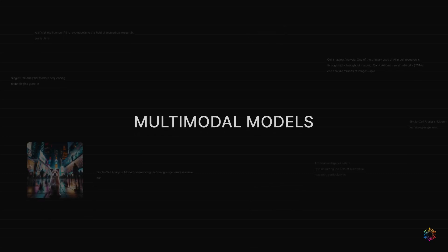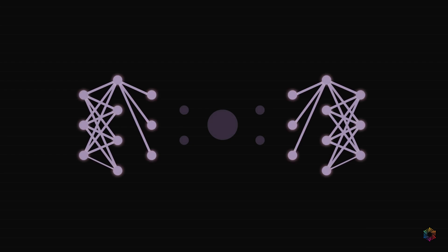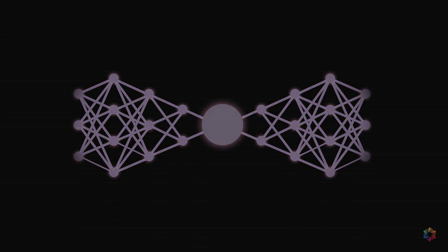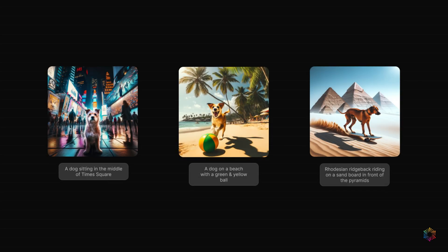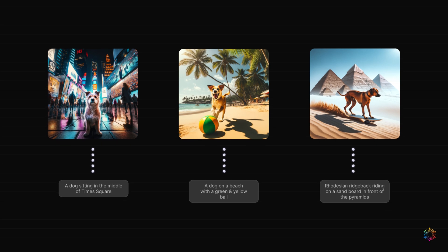Multimodal models that incorporate text and images are unlocking new AI systems that are much more capable and powerful. These methods are trained using massive datasets of paired samples, such as images and their associated captions. This paired data gives us a ground truth that we can use to learn common representations.